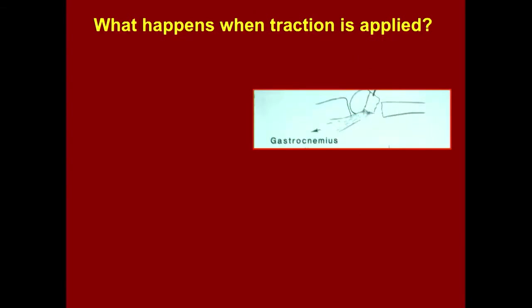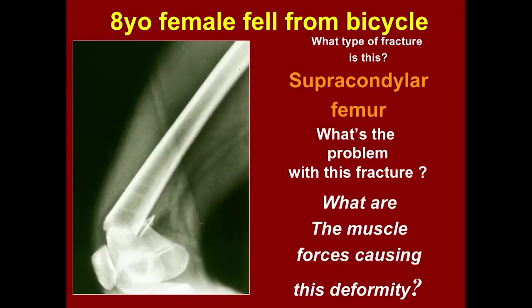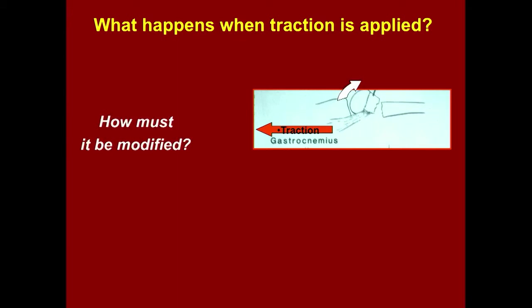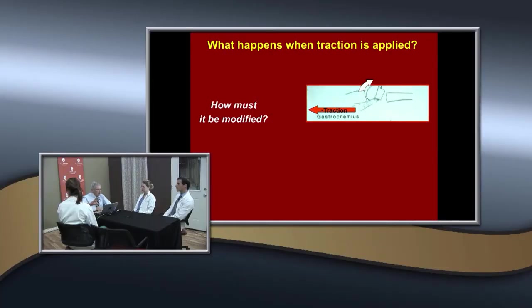So when you apply traction to reduce this fracture, what happens to that distal fragment? It'll extend. And it's a rotation motion that's occurring in that distal fragment. So if you want to treat this in traction, you have to have two-point fixation to control the rotation.